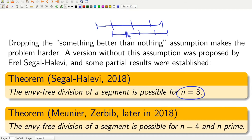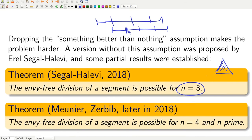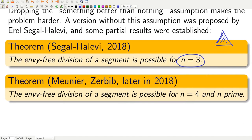For three players, this is a question about a triangle and some closed subsets of the triangle — a good case to start with to check conjectures easily. Later, Friedrich Meunier and Cherazer Bib came up with a non-trivial result that for four players and for prime number of players it works, which is already non-trivial because with many players you cannot do it visually as for three players.